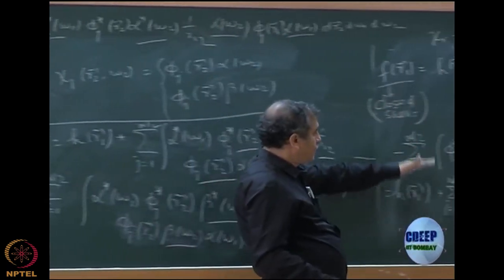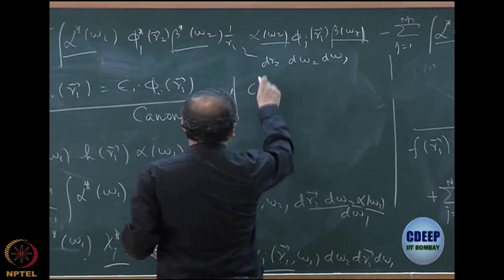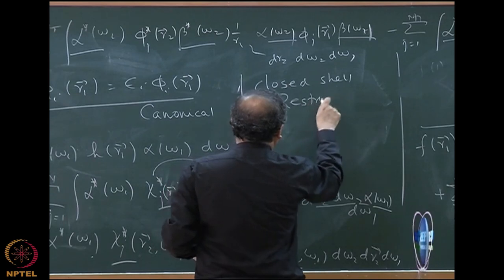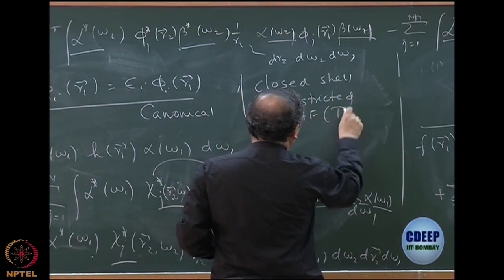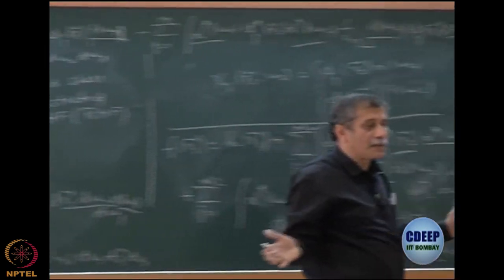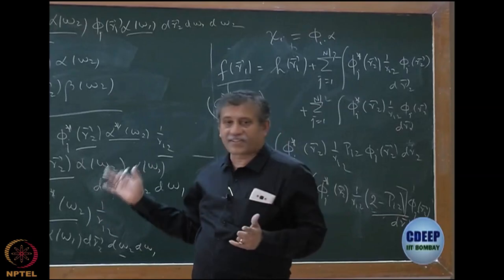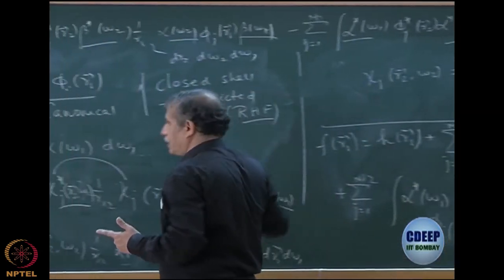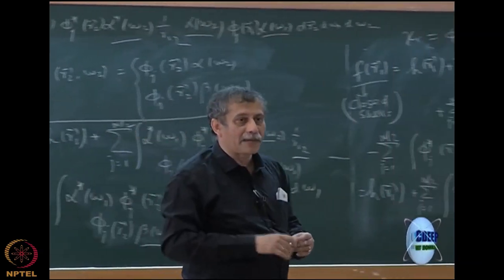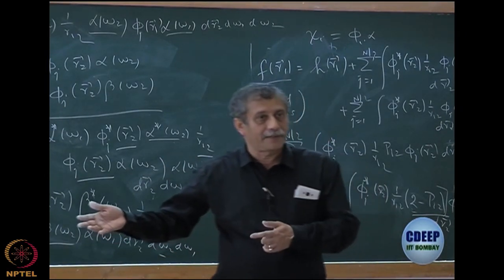This closed-shell Hartree-Fock is often called restricted Hartree-Fock, or RHF. It is called restricted because we are restricting the occupation of the space orbitals — every space orbital must have two electrons, one alpha and one beta. We also have unrestricted Hartree-Fock, UHF, and restricted open-shell Hartree-Fock, ROHF, which are a little more complex. RHF is a special case of ROHF, and UHF is really different.